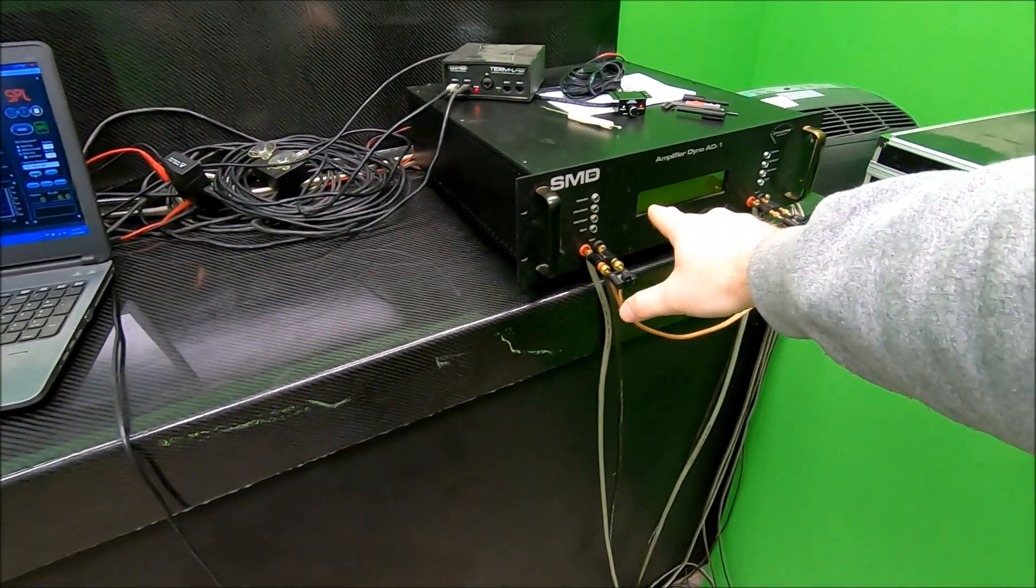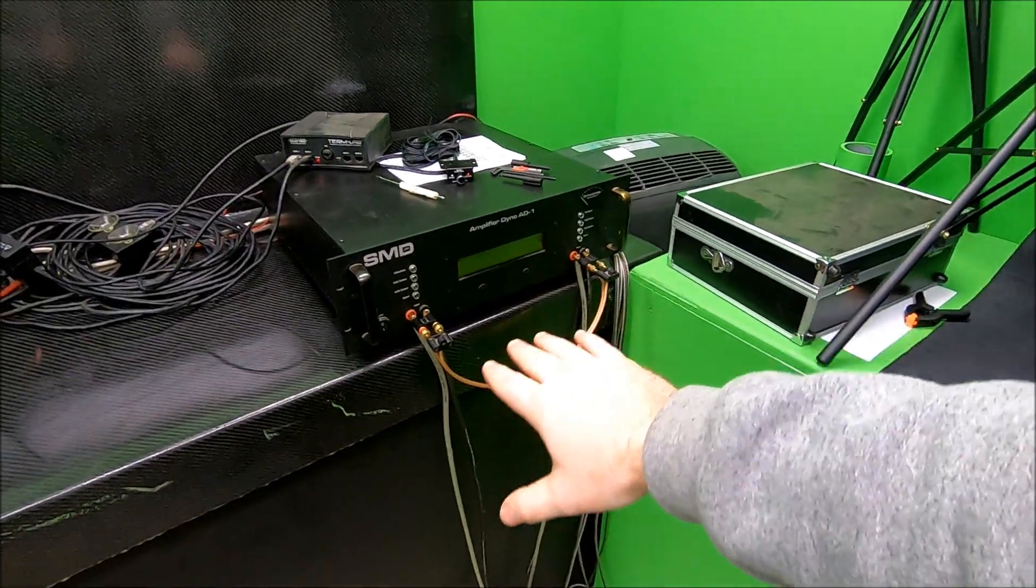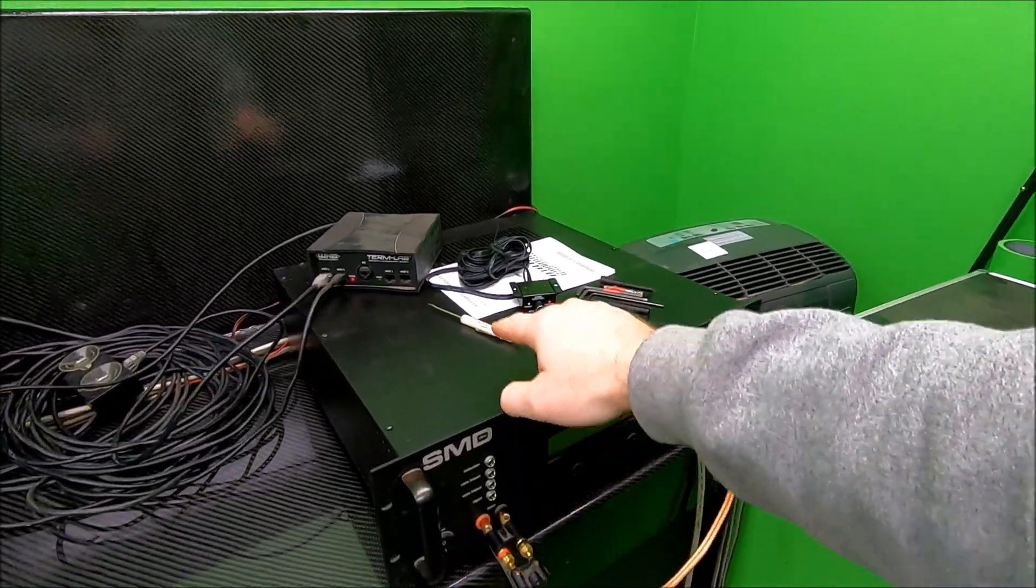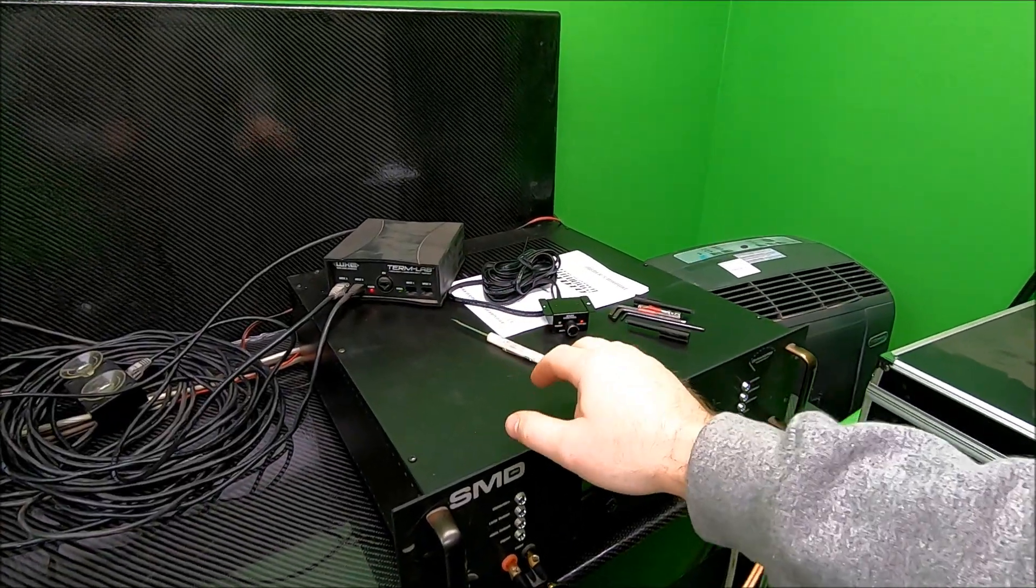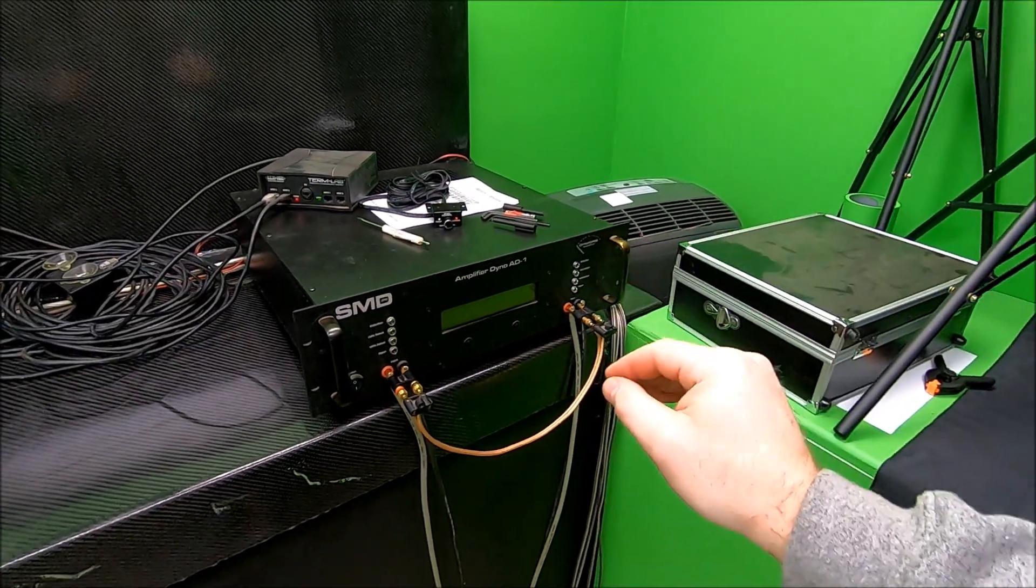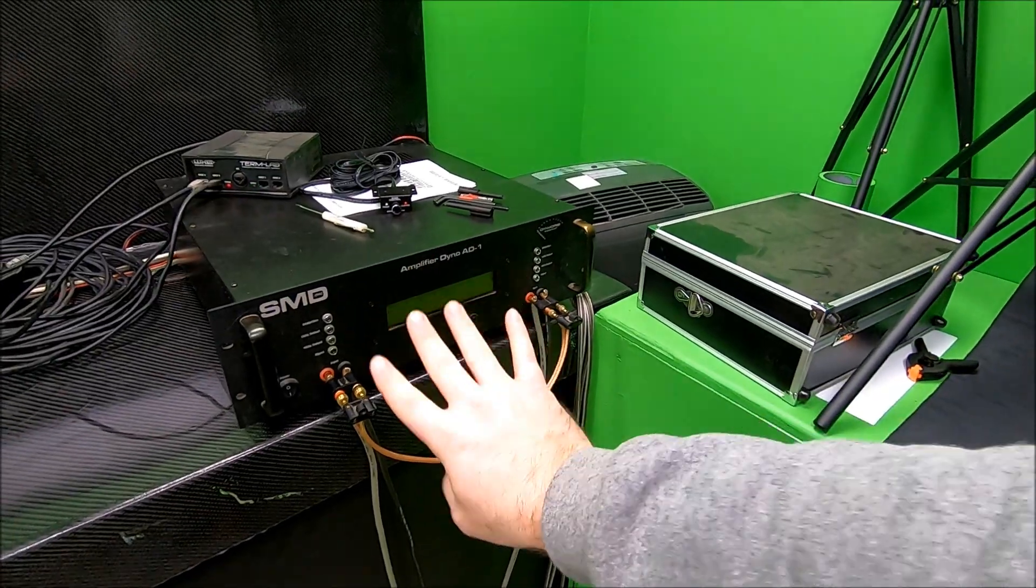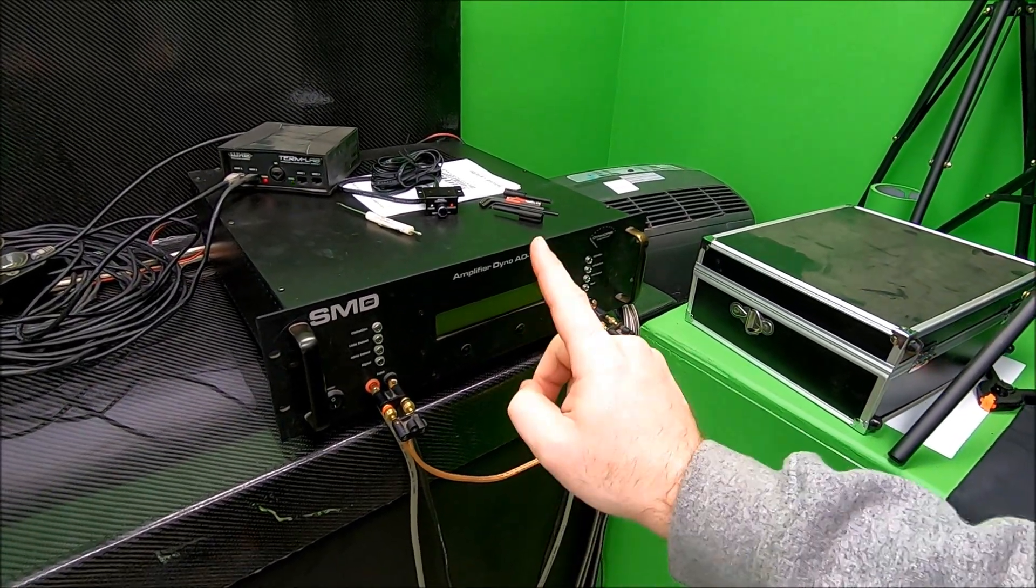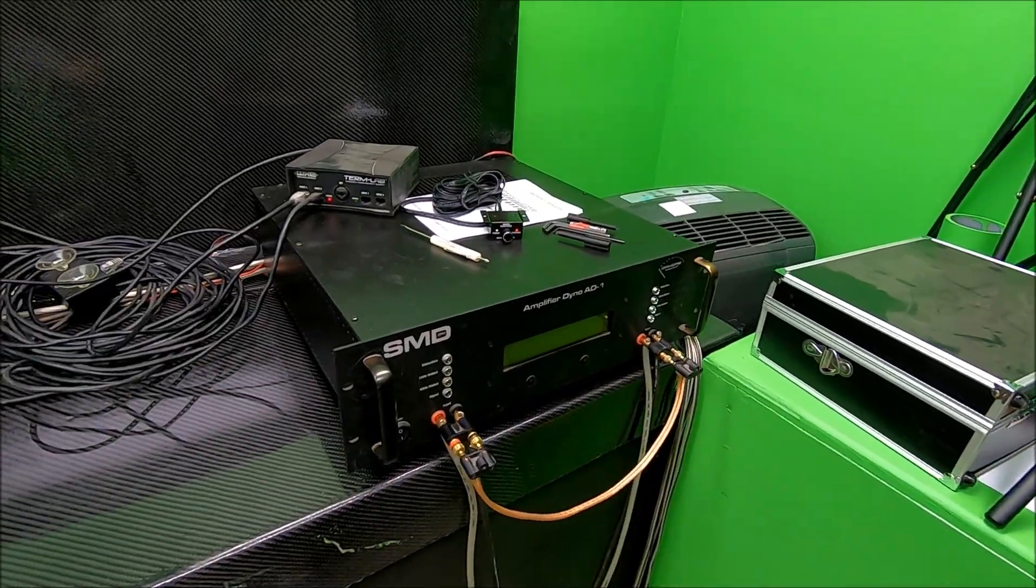I'll just take you through some of the things I got here on the bench to help explain this. When it comes to the amp dyno here, the amp dyno has all kinds of different loads we can test amplifiers at. This thing has resistors inside of it to present a resistive load, that's a fixed load. So if I set this thing to do a test at 4 ohms, it's going to stay at 4 ohms. If I set it to do a test at 1 ohm, it's going to stay at 1 ohm.